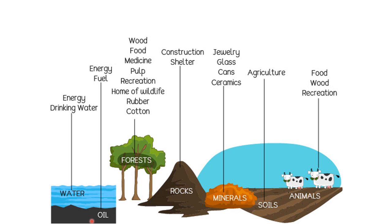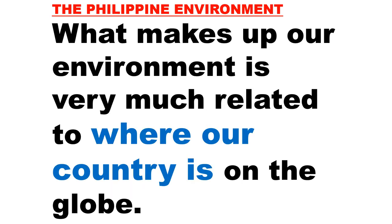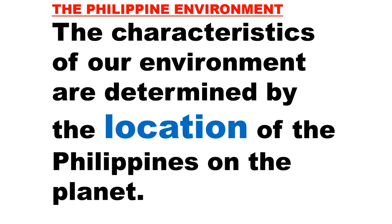The natural resources that we make use of — every plant and animal that lives around us — are also part of the Philippine environment. The Philippine environment is very rich in natural resources such as water, oil, forest, rocks, minerals, soils, and animals. All these things that we find in our surroundings are not due to random luck or accident. What makes up our environment is very much related to where our country is on the globe. The characteristics of our environment are determined by the location of the Philippines on the planet.